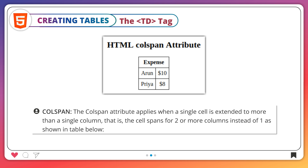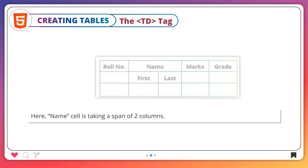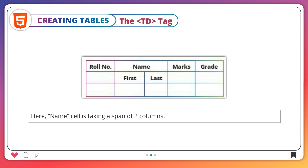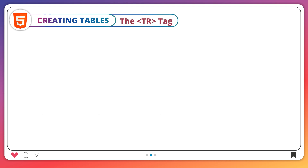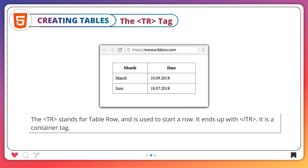Col span: the colspan attribute applies when a single cell is extended to more than a single column. That is, the cell spans for two or more columns instead of one, as shown in the table below. Here, the name cell is taking a span of two columns. The tr tag: TR stands for table row and is used to start a row. It ends with closing tr. It is a container tag.